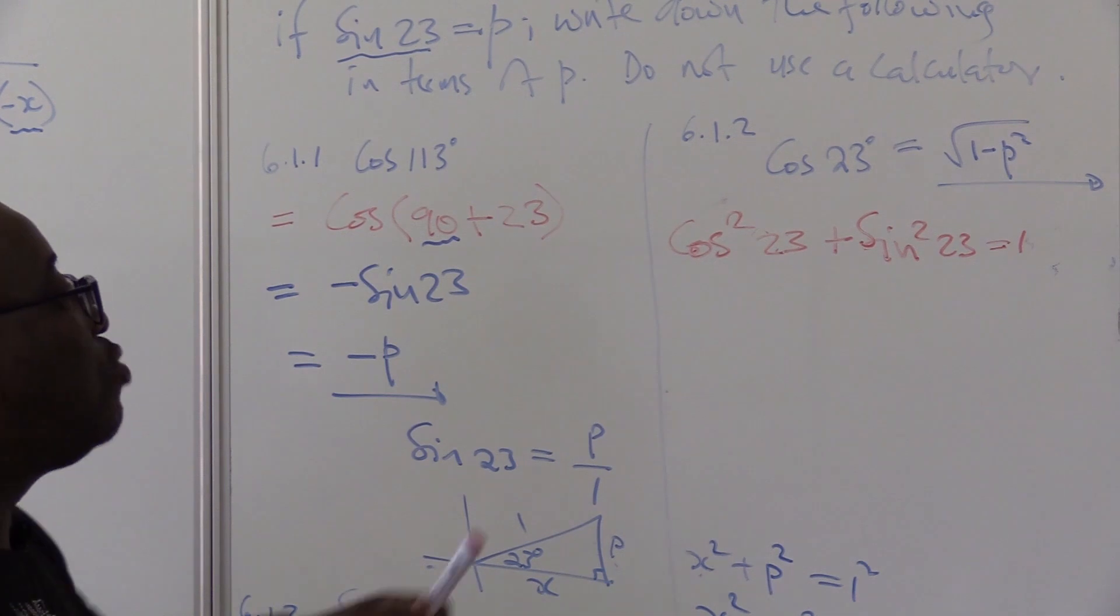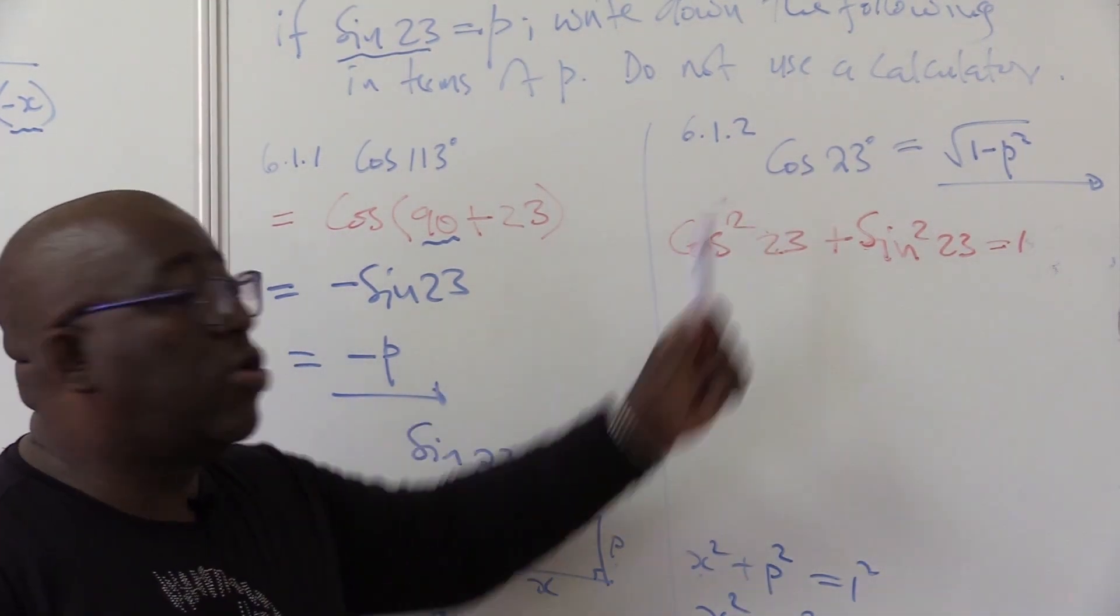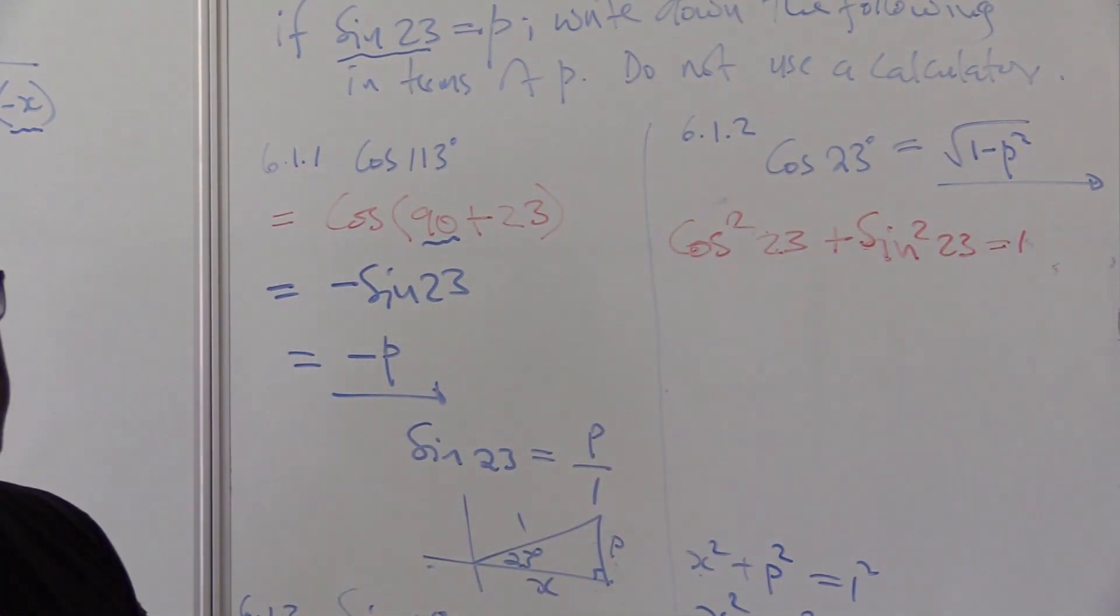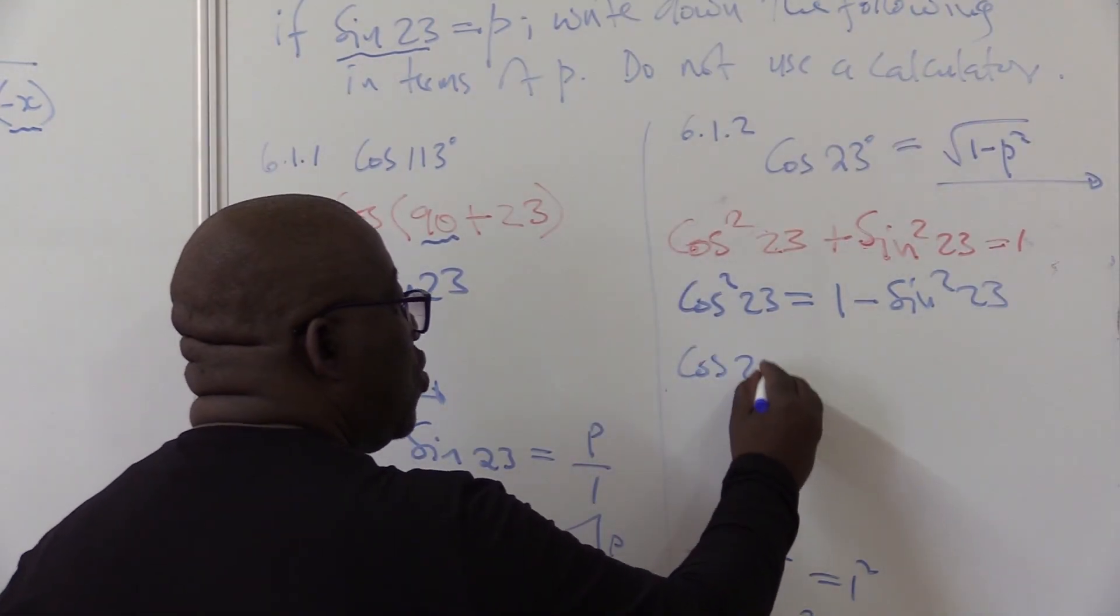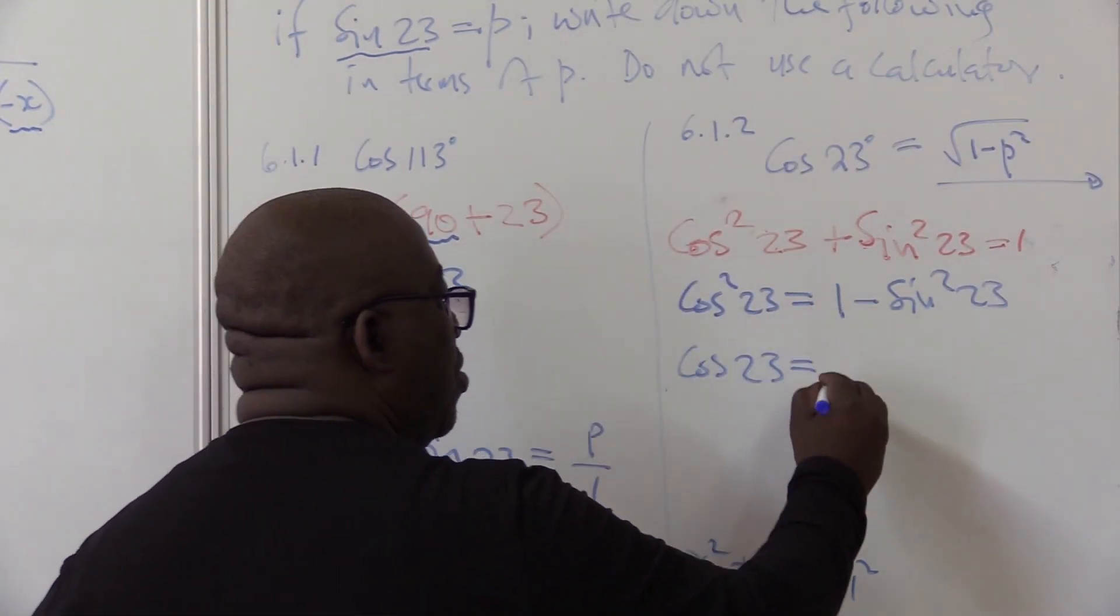Now watch here. What are we looking for? We're looking for cos 23. Let's make cos squared 23 the subject. So this then would be cos 23 equals, put a square root on that side.